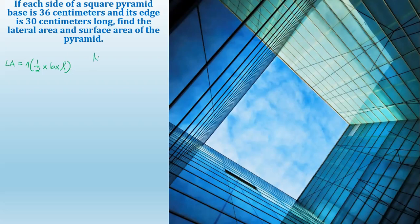Slant height equals square root of edge squared minus the base squared. This is based on Pythagorean theorem. Slant height equals edge squared, which is 30 centimeters long, so 30 squared minus the base, which is half of 36 is 18, so 18 squared.